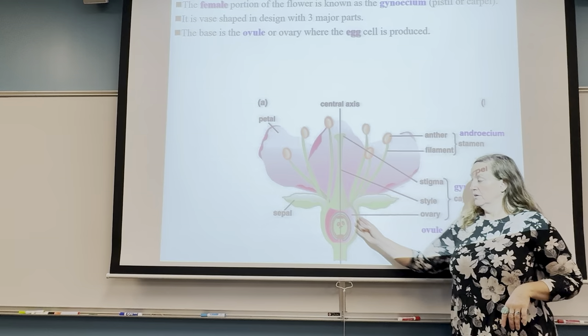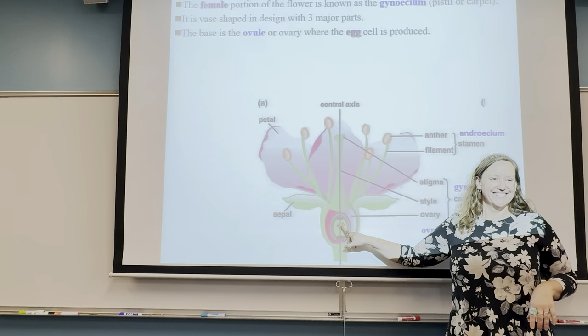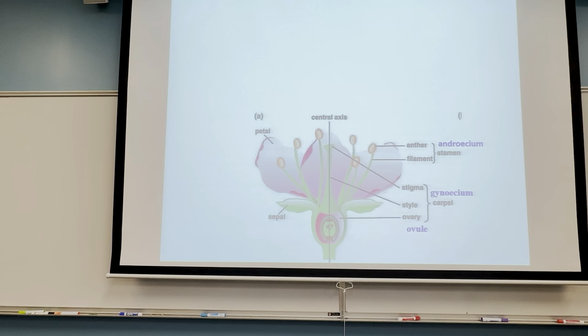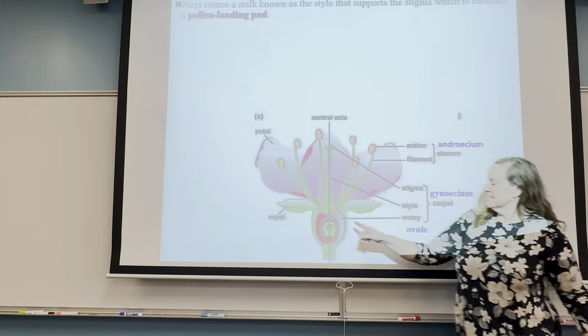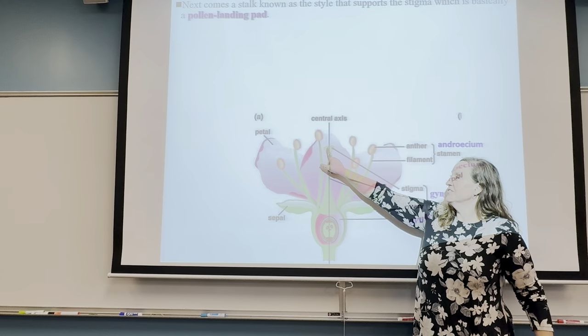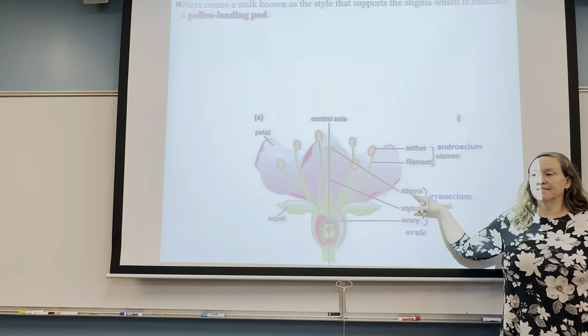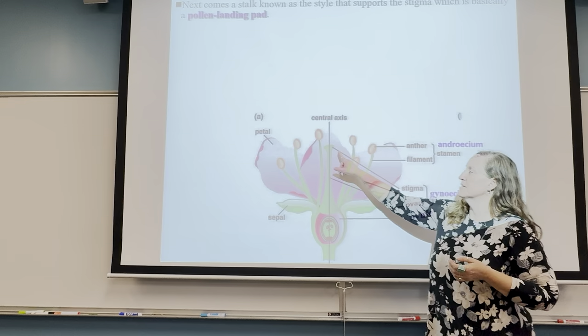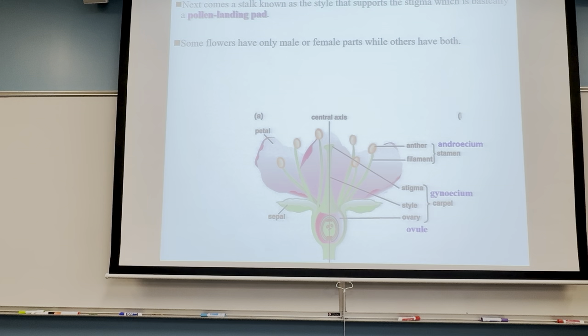What do ovaries have in them? Eggs — that's right. You've got the style, which is the long portion, and then at the tip you have the stigma. The stigma is the pollen landing pad. If you've ever looked closely at a plant, the stigma is often sticky — it releases sugars or sap to attract pollinators.